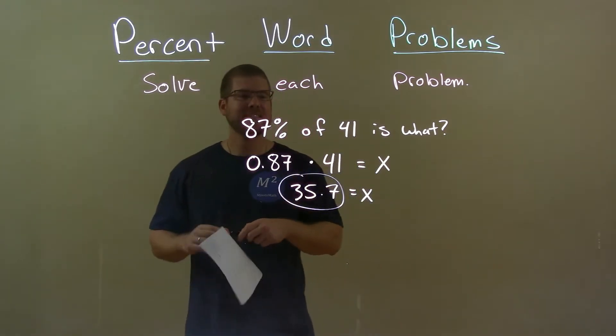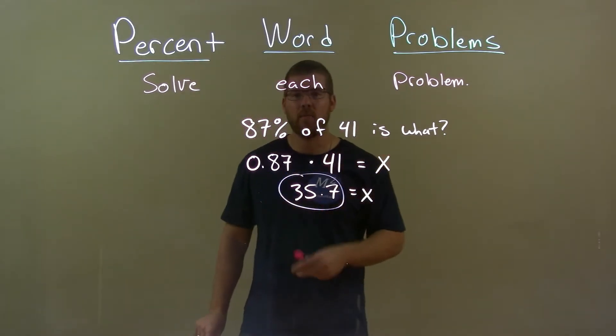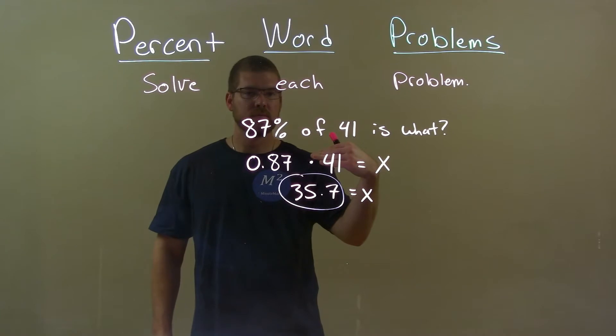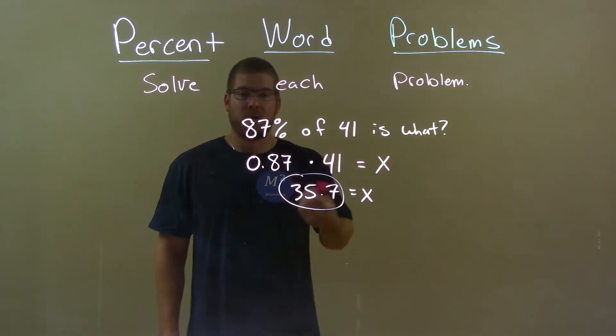Quick recap: we're given 87% of 41 is what? Well, we converted that to an equation and solved for our variable x and got our final answer. 87% of 41 is 35.7.